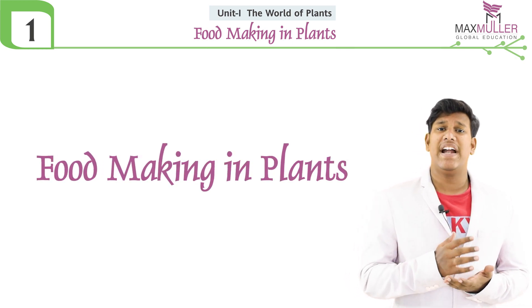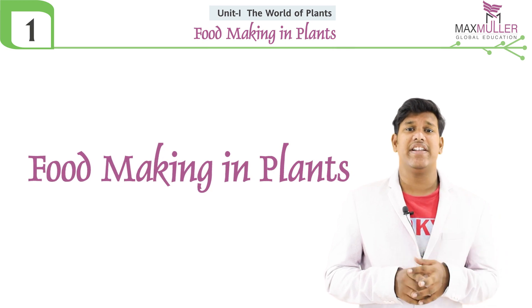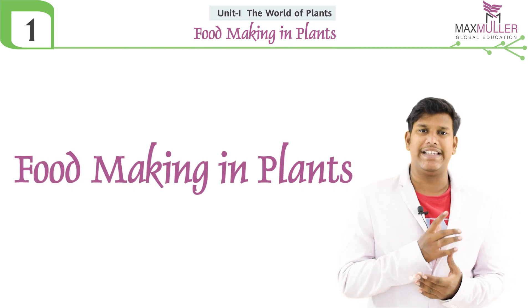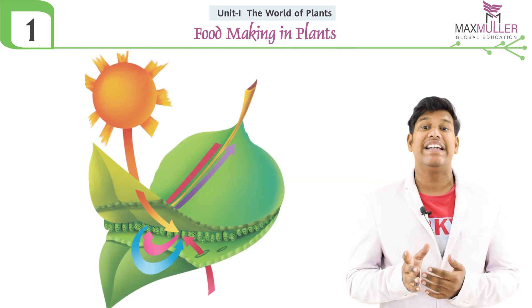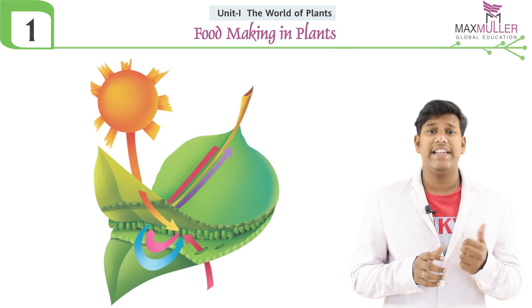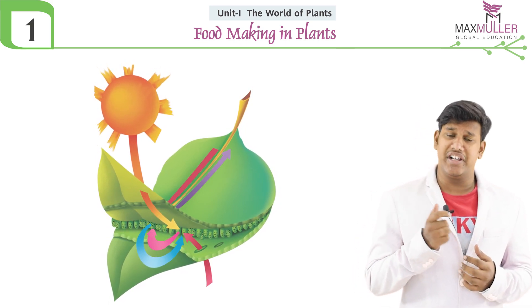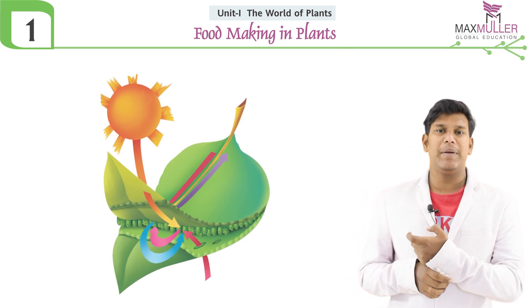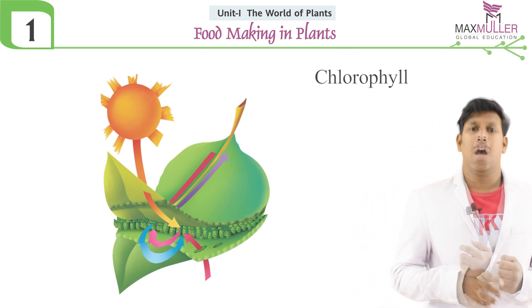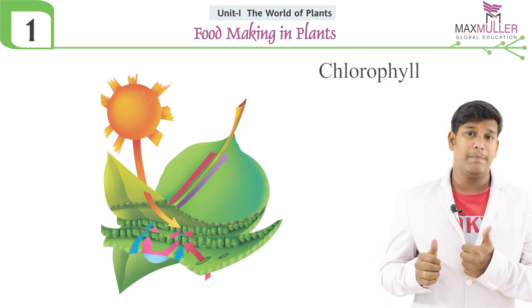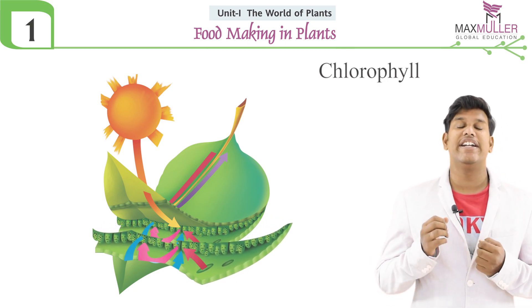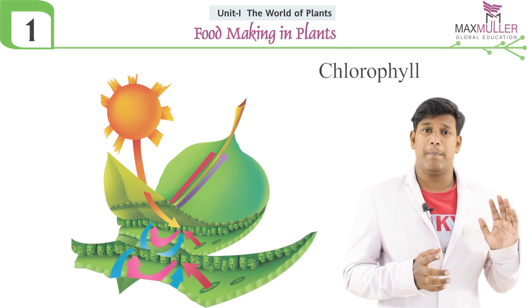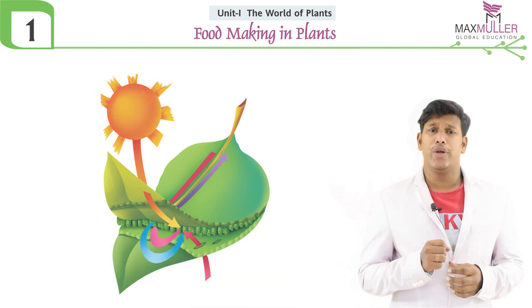Let us think how plants can prepare their own food. Just have an idea around you — what is the color of all plants which you see? The plants are in green color. Have you ever thought why these plants are all in green color? It's the presence of a pigment known as chlorophyll.